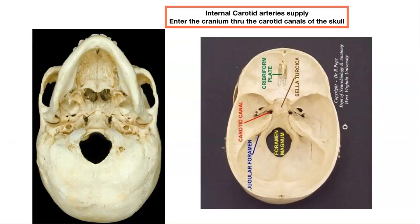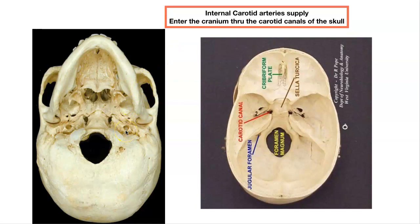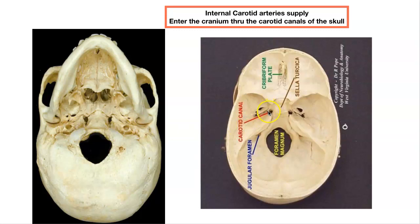Now we're going to do the internal carotid arteries. They enter the skull through the carotid canals. Way back in the second or third week of class, remember we were doing the jugular foramen and the carotid canals, sticking pipe cleaners in. This is the carotid canal. Those internal carotid arteries are entering through here and coming out around here, just lateral to the sella turcica on each side.